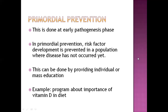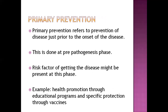Next is primary prevention. Primary prevention is done at the pre-pathogenesis phase, before the onset of signs and symptoms. Primary prevention is the prevention of disease before the onset of disease. In primary prevention, the risk factor of getting the disease is present, but we can still prevent the disease.